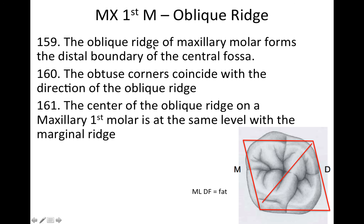Now we're going to focus on the oblique ridge — you tend to get a lot of questions on it when they test the maxillary first molar. The oblique ridge of the maxillary first molar forms the distal boundary of the central fossa. If you imagine you're a little person in the distal pit and you walk toward the distal, you're going to run right into the oblique ridge — so that's the distal boundary of the central fossa.